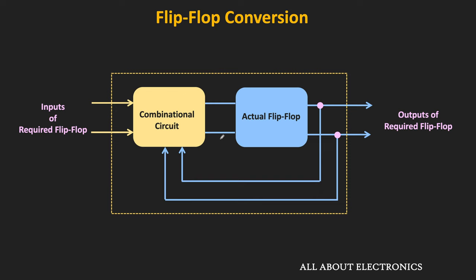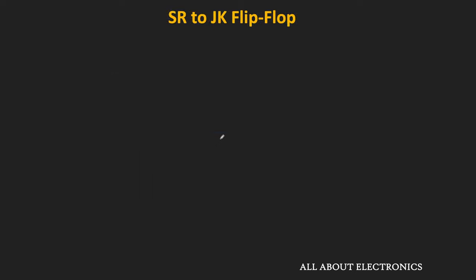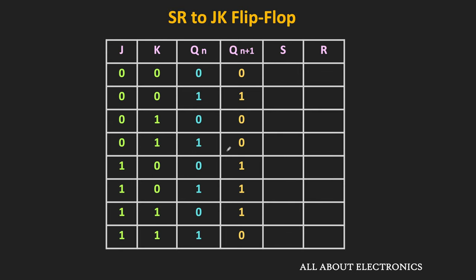Since our required flip-flop is the JK flip-flop, we should be aware about the behavior of the JK flip-flop — in other words, we should know the truth table of the JK flip-flop. For the JK flip-flop: when both inputs are 0, the next state is the same as the present state. When J is 0 and K is 1, the flip-flop will get reset to 0. When J is 1 and K is 0, the output of the flip-flop will become 1 in the next state. And when both inputs are 1, the output will toggle — if the present state is 0, the next state becomes 1, and if the present state is 1, the next state becomes 0.